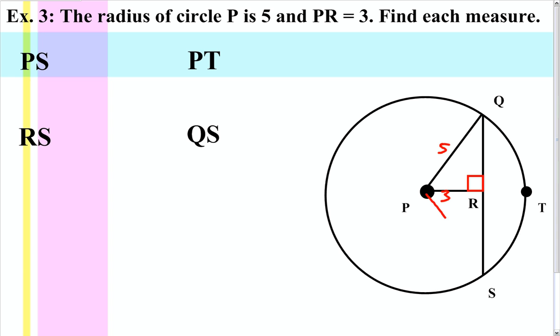To find segment PS, we must recognize that this is also a radius, so it too will be 5. Similarly, segment PT is also another radius, so it will be 5.